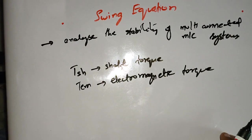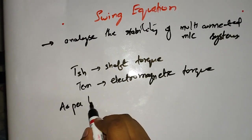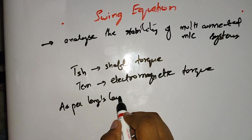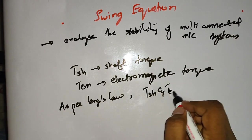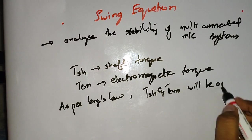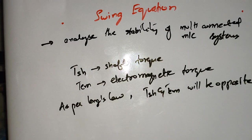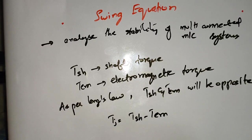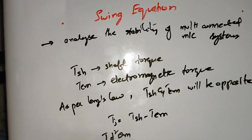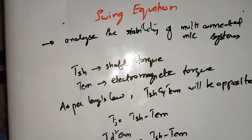As per Lenz's law, the effect opposes the cause. Therefore, T_SH and T_EM will be opposite to each other. Following these guidelines, I will write the formula for accelerating torque: T_J = T_SH minus T_EM. So, the equation is J · d²θ_M/dt² = T_SH minus T_EM.